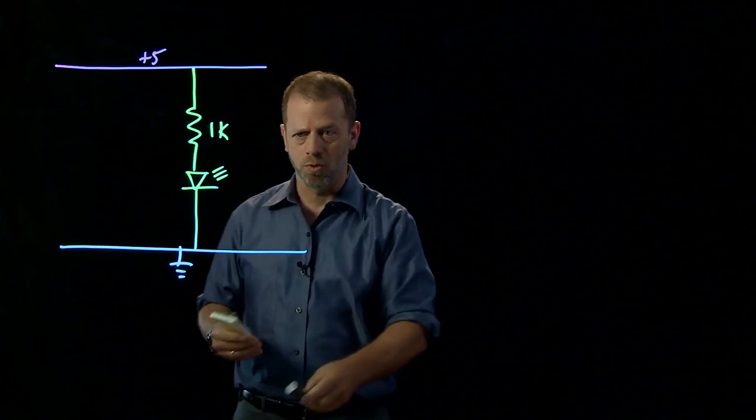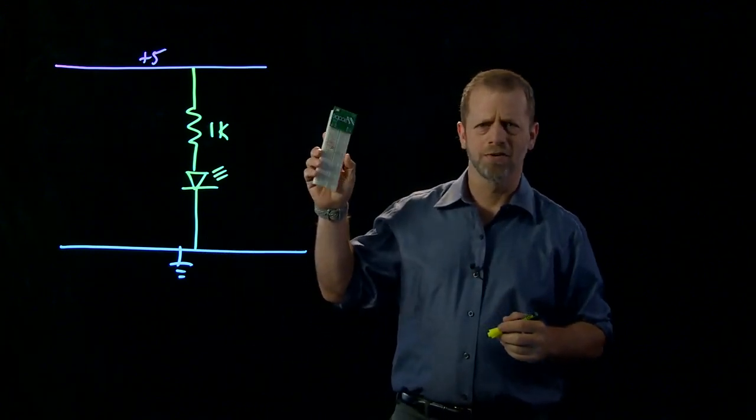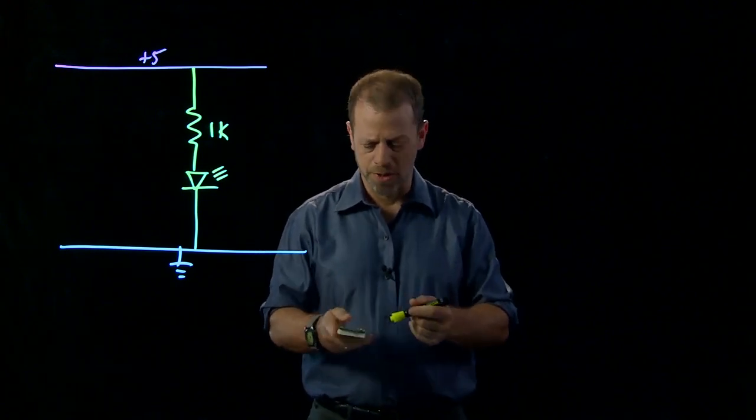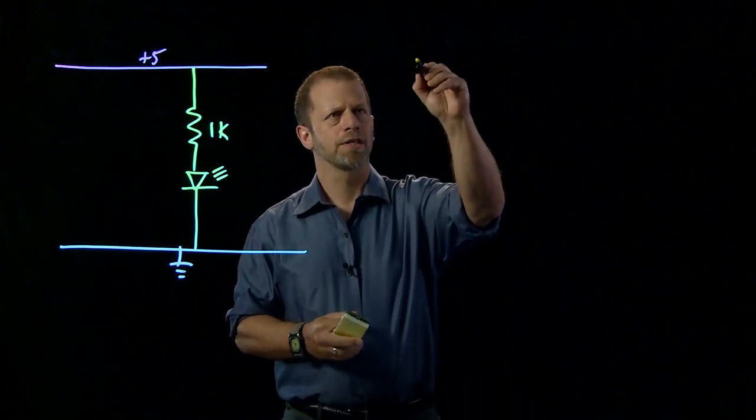So let me sketch out how this works. The breadboard consists of, I think it has 830 holes, connection points that you can stick the end of wires into. And they're arranged like this.